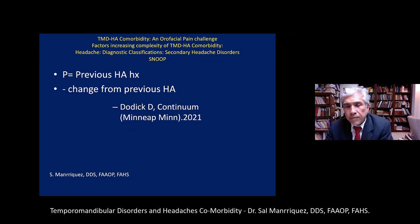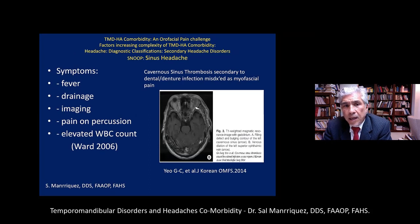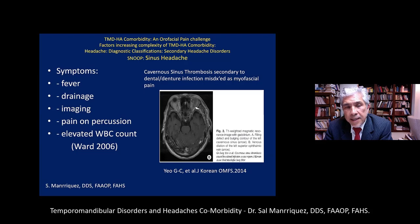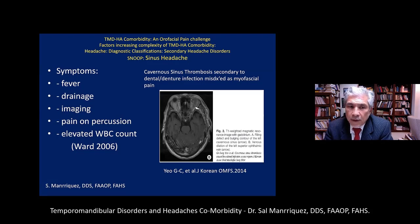The 'P' in the SNOOP factors stands for previous headache history — a change in previous headache history is also a red flag. Regarding sinus headache: migraine with autonomic signs is frequently misdiagnosed as sinus headache. For a true sinus headache, there should be a fever, yellow or green nasal discharge, corroborating images such as MRI with contrast, pain on percussion over the sinuses, and an elevated white blood cell count on a CBC.